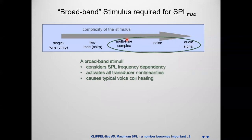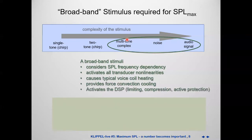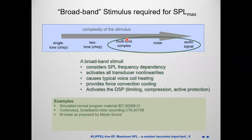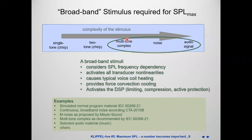By having a dense broadband signal, we activate all nonlinearities and get typical heating of our device and the same typical cooling effects — convection cooling by pumping air through the gap. We also want to activate all DSP functionality like limiting compressors and active protection in a typical way. Examples include simulated program material, for which there is a shaping table in IEC 60268-21 for pink noise. There is a similar signal from the CDA standard, a new signal proposed by Meyer Sound called M-noise, a multi-tone complex now recommended by the new standard 21, and of course any selected audio material.